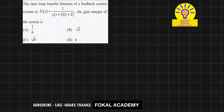In this problem, an open loop transfer function for a feedback control system is given as G(s) = 1 / [s(s+1)(s+2)]. We need to find the gain margin for this given open loop transfer function.